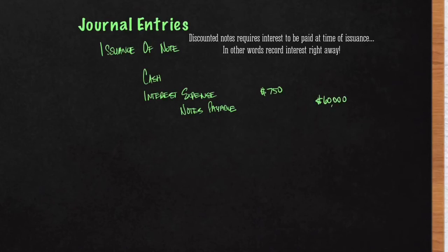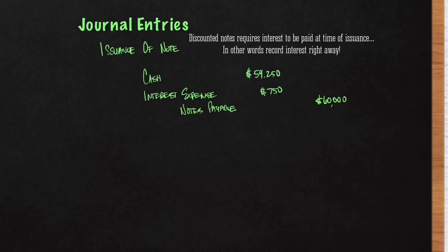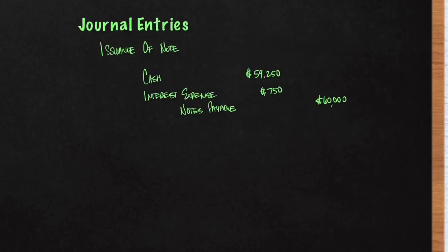The difference between the two is what you're leaving the bank with. So $60,000 minus $750 gives you the amount of the proceeds — what you leave the bank with — which in this case is $59,250. Your Notes Payable liability is $60,000, but you're only walking away with $59,250. That's what a discounted note gives you.